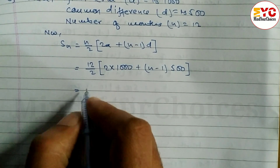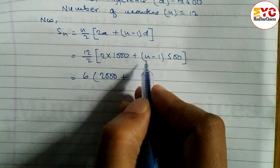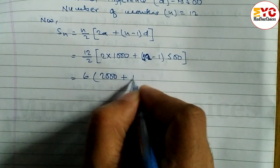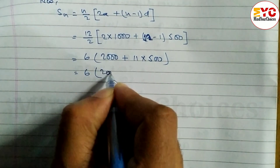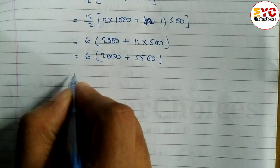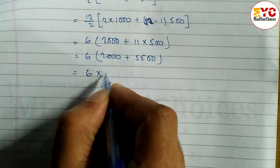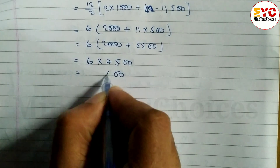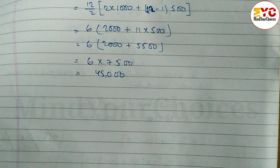Dividing 12 by 2 gives 6. So we get 6 × (2000 + 11×500) = 6 × (2000 + 5500) = 6 × 7500 = 45,000. So the total amount deposited in one year is rupees 45,000.